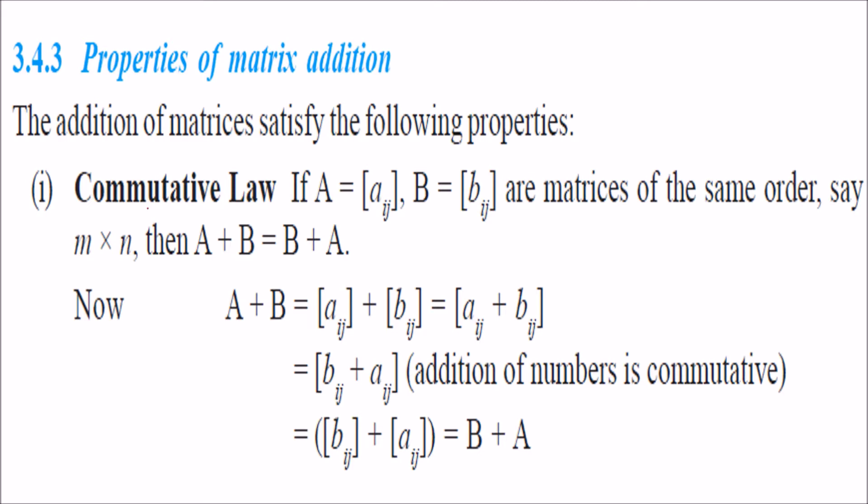Commutative law: if you have matrix A and B and these are of same order, this has to be there if you want to add or subtract. Then the matrices are of same order, then only it is possible.